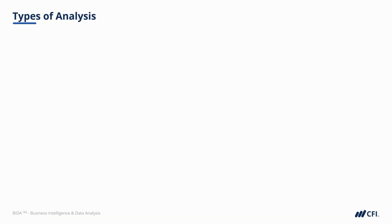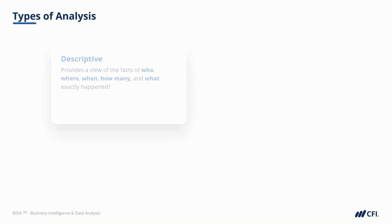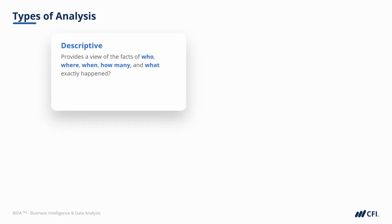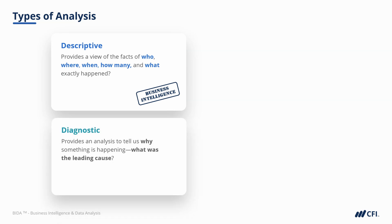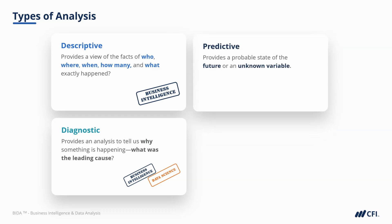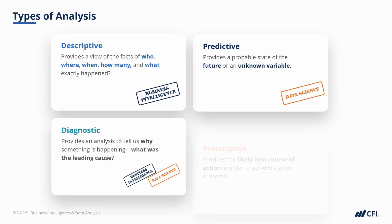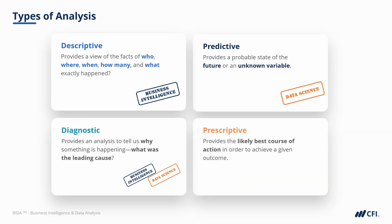Let's dive into those definitions and a few others. Descriptive analysis gives us a view of who, where, when, how many, and what exactly happened — clearly the realm of business intelligence. Diagnostic analysis tells us why something happened, or what was the leading cause. As soon as we start to work with uncertainties and predictions, this question could lie in both BI and data science. Predictive analysis gives us a most likely view of the future or of an unknown variable — clearly data science. Finally, prescriptive analysis provides the likely best course of action to achieve a given outcome, and since we're dealing with uncertainties and future probabilities, this is also data science.